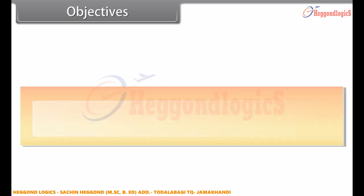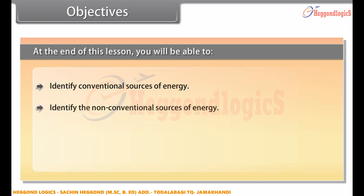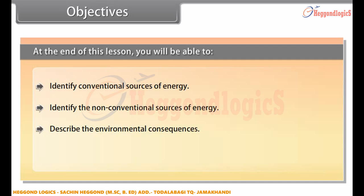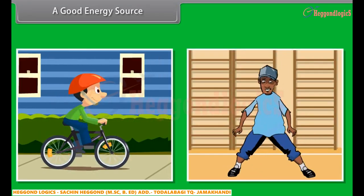Objectives. At the end of this lesson, you will be able to: identify conventional sources of energy, identify the non-conventional sources of energy, describe the environmental consequences, and explain the duration of the energy sources.